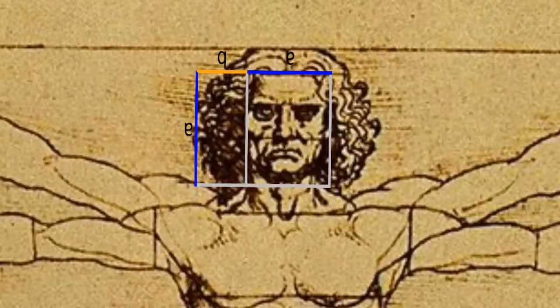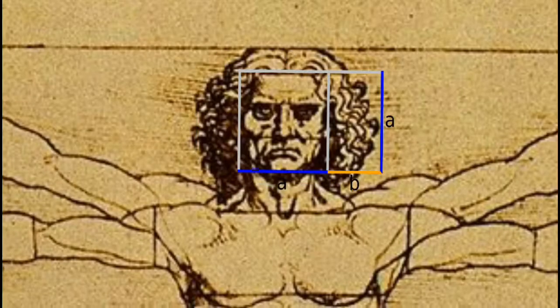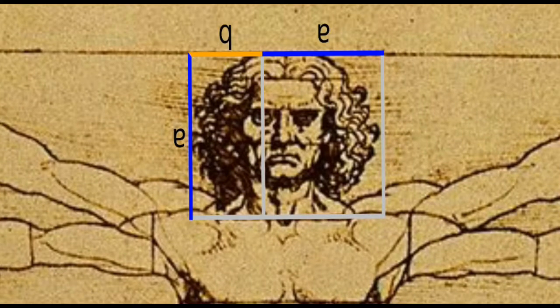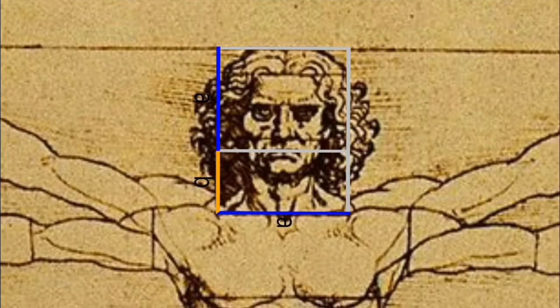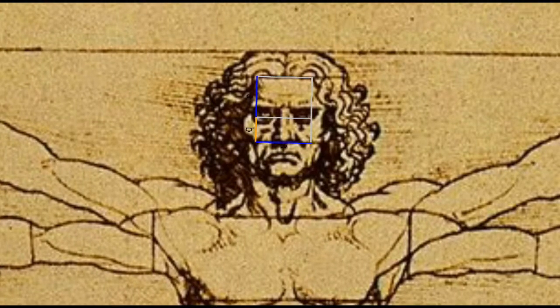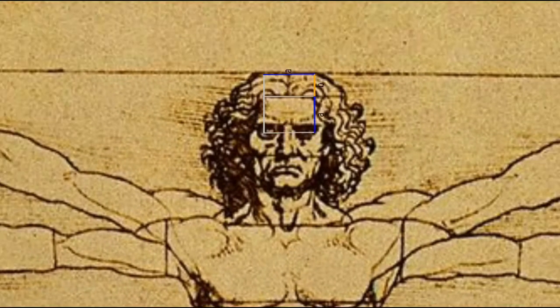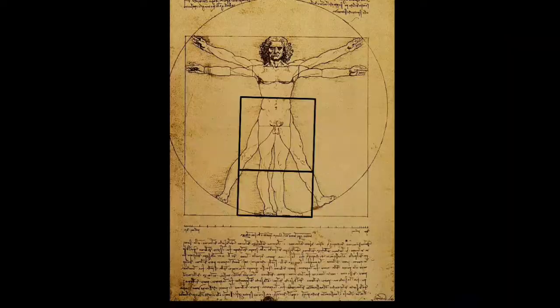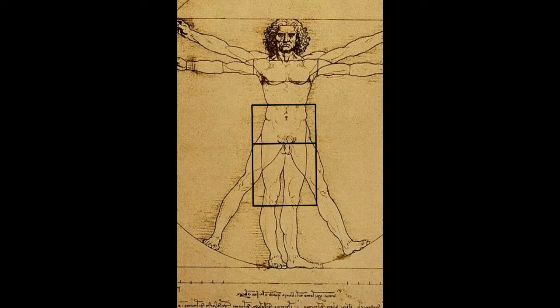Did da Vinci use the golden ratio? There is no evidence that da Vinci deliberately used the golden ratio, but we can clearly find the golden ratio in his paintings.